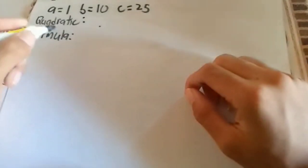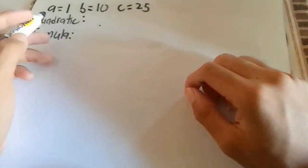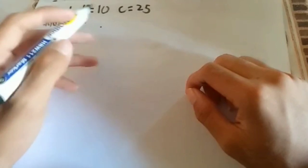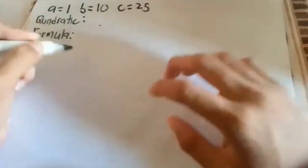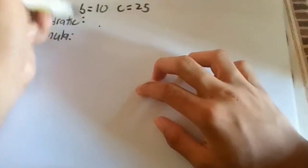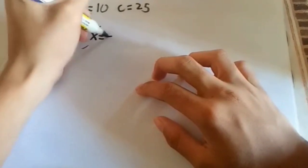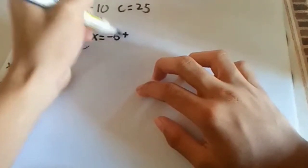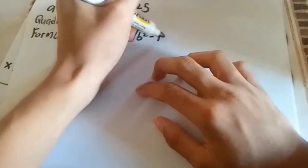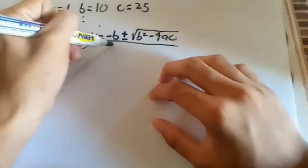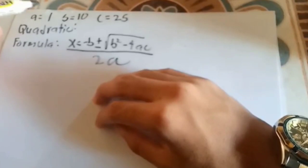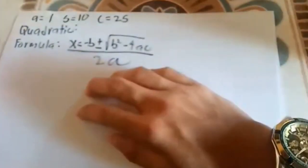Okay, let's solve the quadratic equation. Since nakuha na natin yung value ng A, B, C — the value of A is equals to 1, the value of B equals to 10, and the value of C is equals to 25. Let's solve the quadratic equation, but first we need to write the quadratic equation formula. We need to apply the values of A, B, C to the quadratic equation formula.